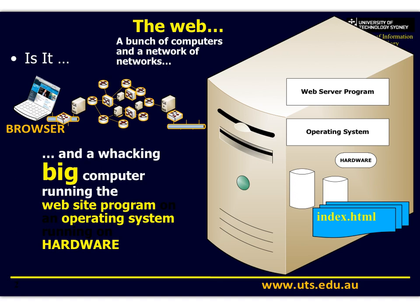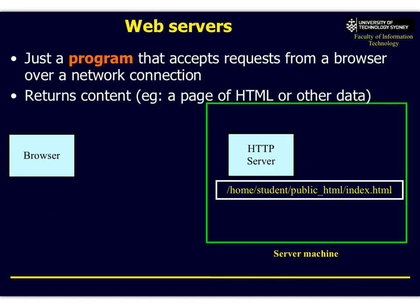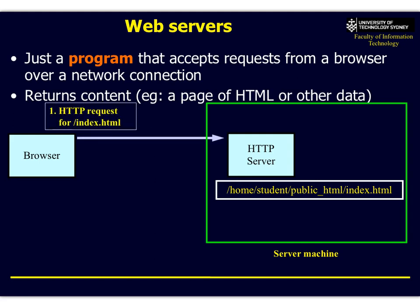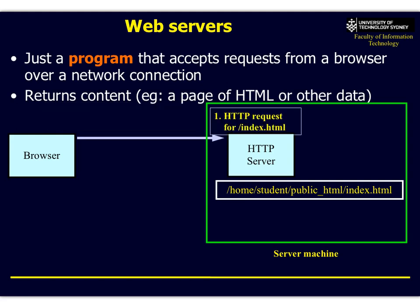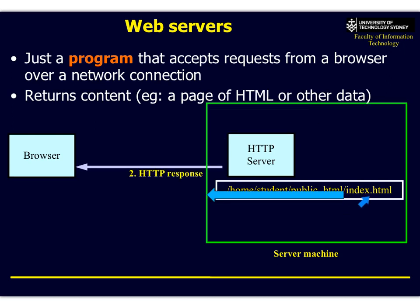The web is a bunch of computers, networks, and web servers, including a web server program running on top of an operating system, which serves files like index.html. A web server is just a program that accepts requests from a browser over a network connection. Typically, a browser will make a request for index.html, and the server gets the request, finds the appropriate file, and sends it back — this is called an HTTP response.